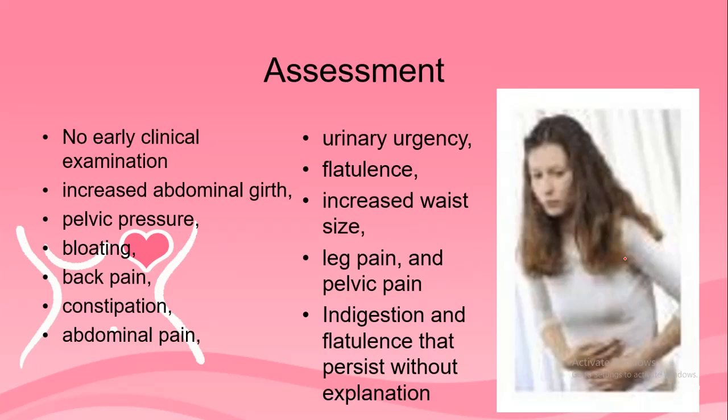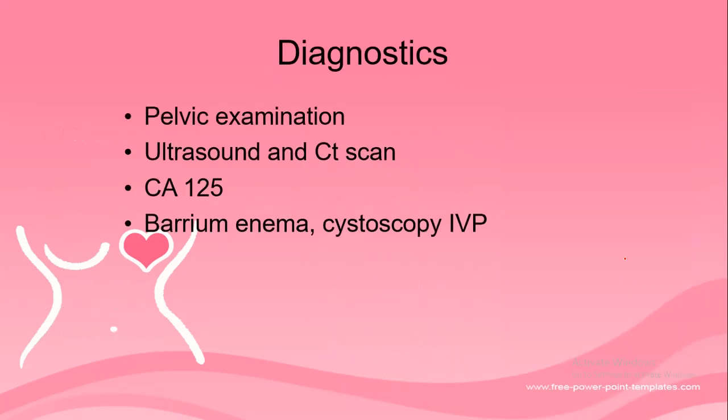Upon assessment, in the early part of the disease there will be no clinical findings. However, there will be increased abdominal girth, a feeling of increased pelvic pressure, bloating, back pain, constipation, and abdominal pain. There will also be frequency or urgency of urination, flatulence, increased waist size, leg pain, pelvic pain, and persistent indigestion.